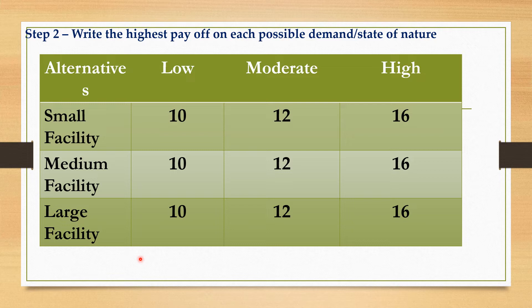Now, based on step one, we write down the highest amount under each state of nature alongside the alternatives. Under 'Low,' write 10, 10, and 10. Under 'Moderate,' the highest is 12. Under 'High,' the highest is 16 — write 16, 16, and 16. We have already assigned zero to the highest amount under each column, and now we will write down those highest amounts to proceed with subtraction.